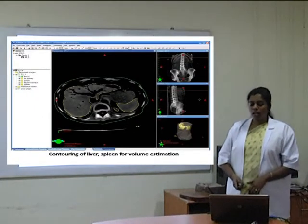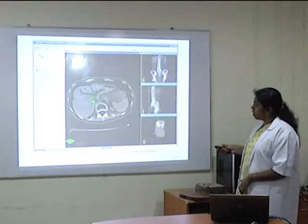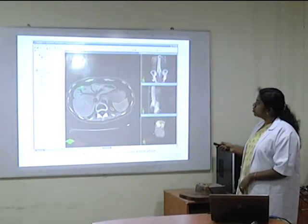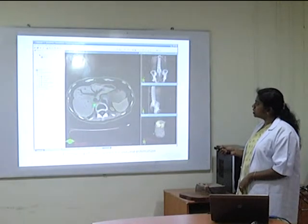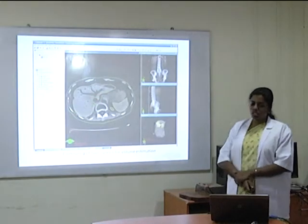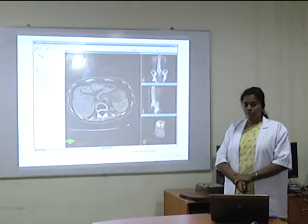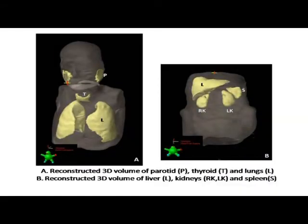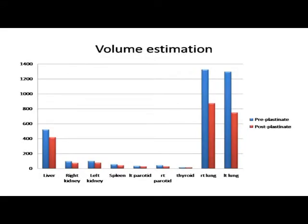Volume estimation was done by contouring the organ from the cranial end to the caudal end in all the slices of the CT images. This was further confirmed by 3D reconstructed volumes. There was an average shrinkage of 25% in all the organs, though it was not much in parenchymatous organs like thyroid, parathyroid, kidney, liver, etc., as seen in this graph.